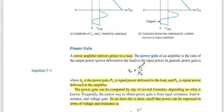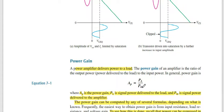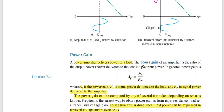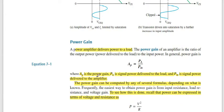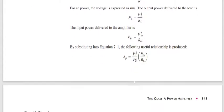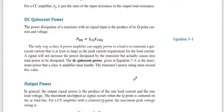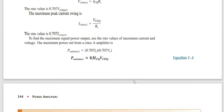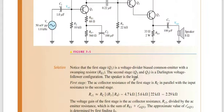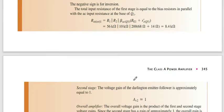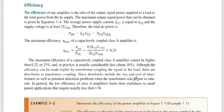Power gain is simply output power divided by input power — the output power of the load divided by the input signal power. You can read through the details yourself; it is not very complicated. Everything has been previously discussed.